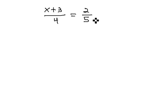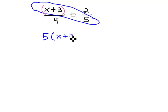Again, we can apply the same cross product property. However, we must also remember that if there is more than one term in the numerator, it must be in parentheses. This means we have 5 times the quantity x plus 3 is equal to the other diagonal, 4 times 2, or 8.